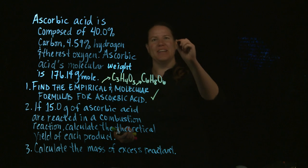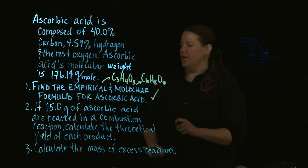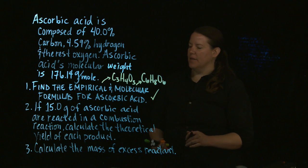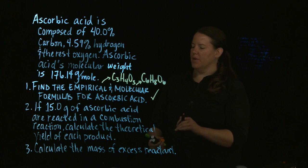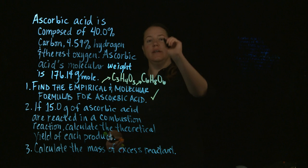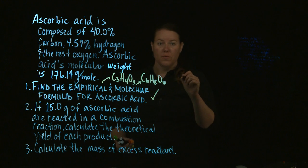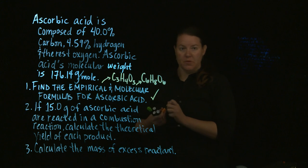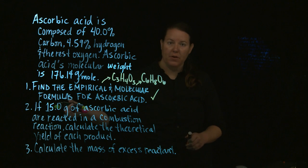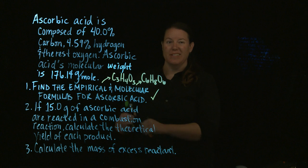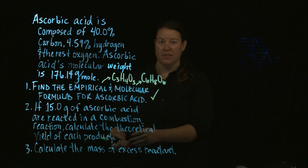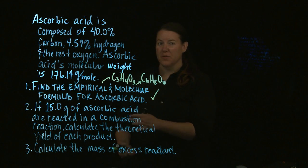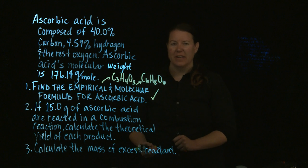So number two. If 15 grams of ascorbic acid are now reacted in a combustion reaction, calculate the theoretical yield of each product. Indeed with number two we're doing stoichiometry. How do I know that it's a stoichiometry problem? Because I'm given an amount of one thing, ascorbic acid, and I'm asked to calculate products, which if I'm reacting this ascorbic acid, it's a reactant, not a product.